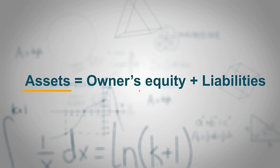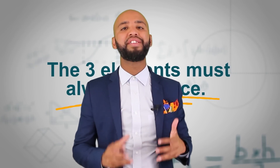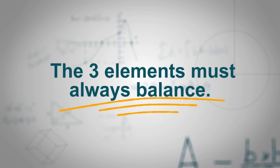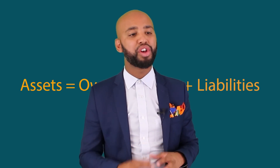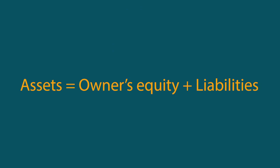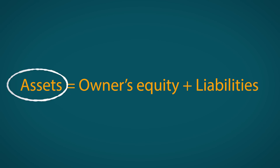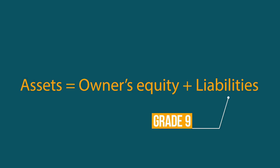The three elements of the accounting equation must always remain in balance. The three elements — assets, owner's equity, and liabilities — must always remain in balance. In Grade 8, we are only going to focus on two elements of the accounting equation: assets and owner's equity. In Grade 9, we will cover liabilities.